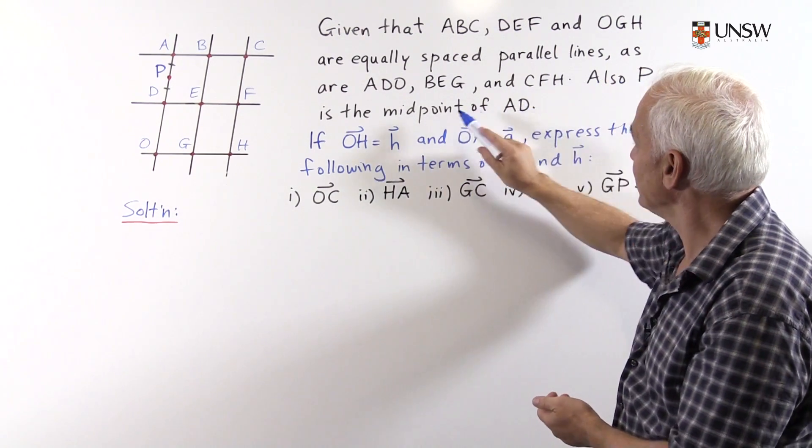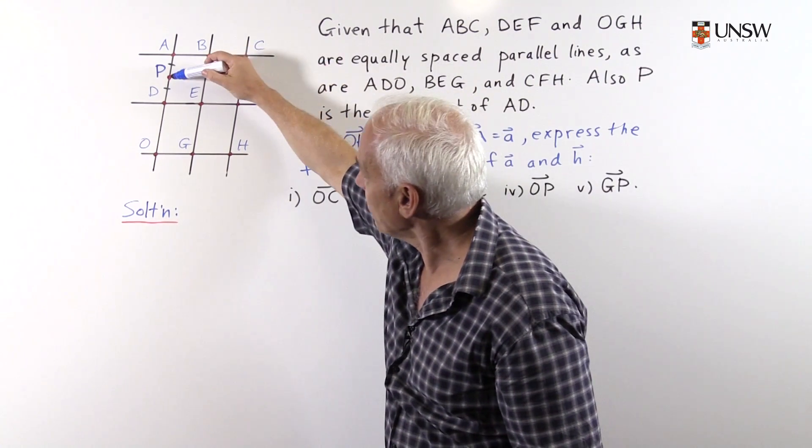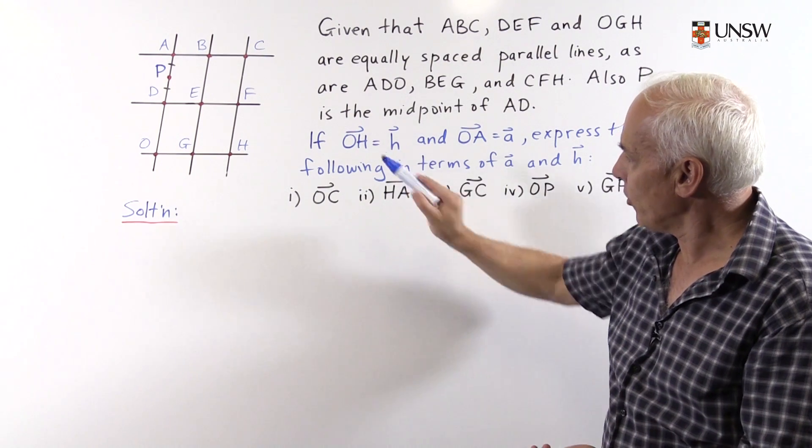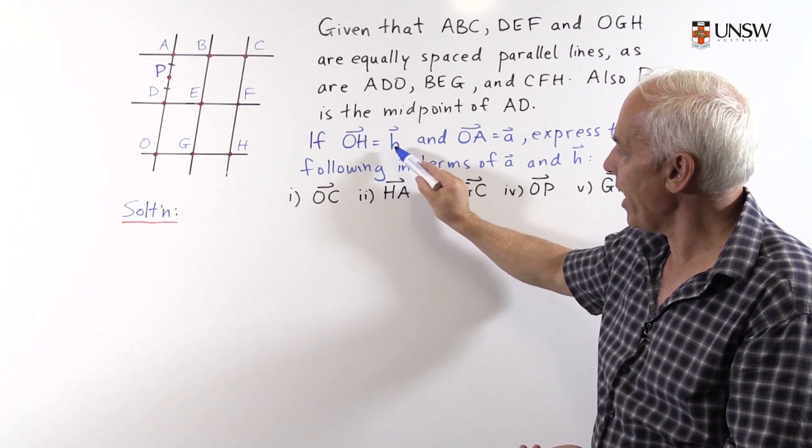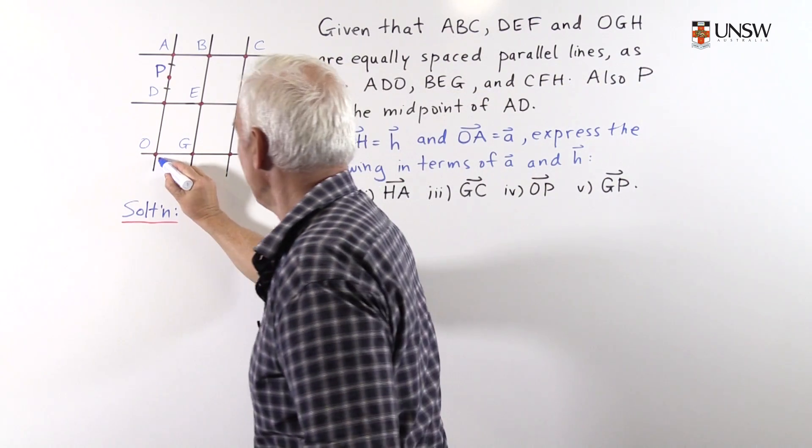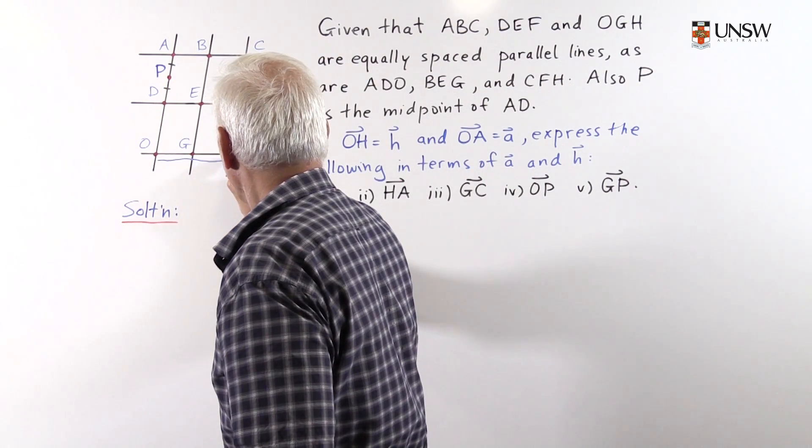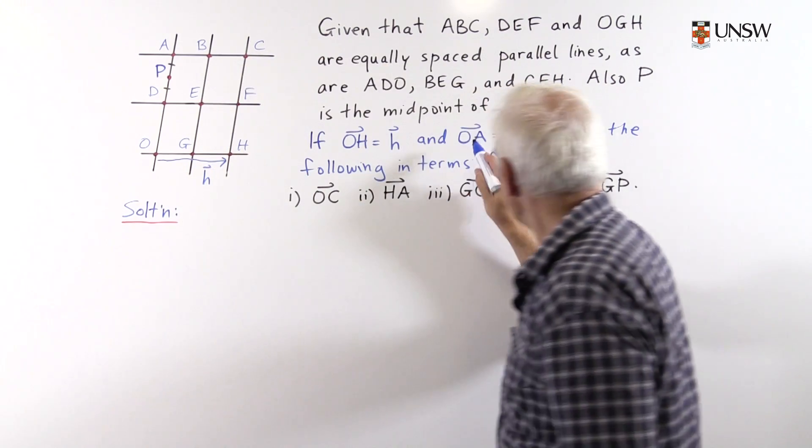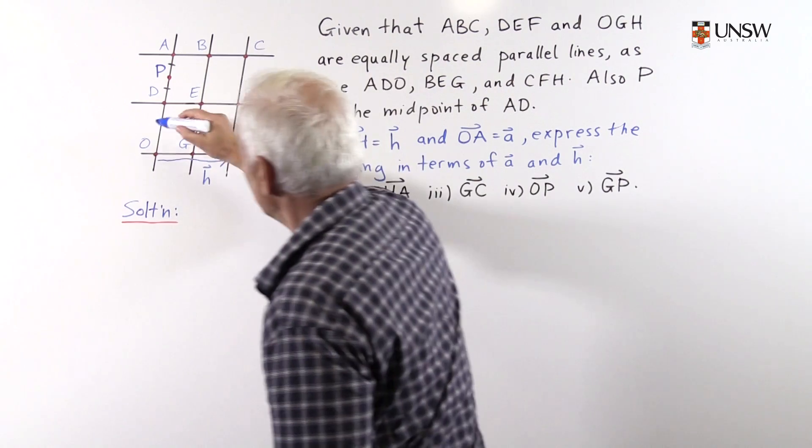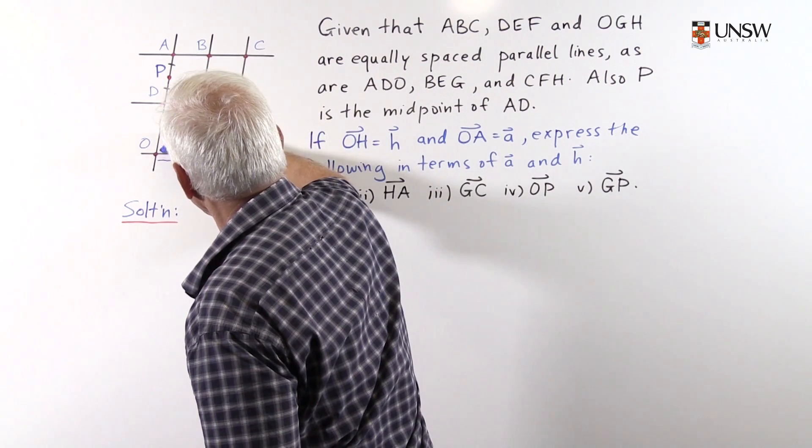And also, P is the midpoint of AD, so that point there is halfway between points A and D. We're also told that the vector OH is called little h. I might draw that here. So that's the vector H. And the vector OA is what we're calling little a. It's the vector from O to A, maybe along here.